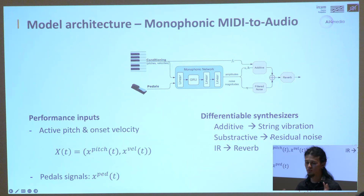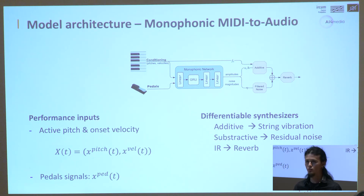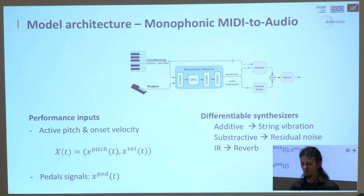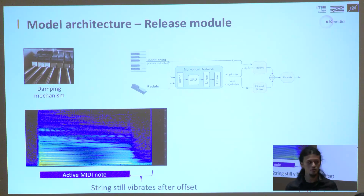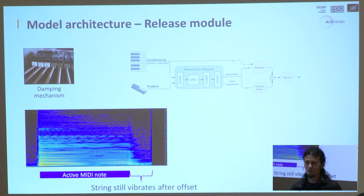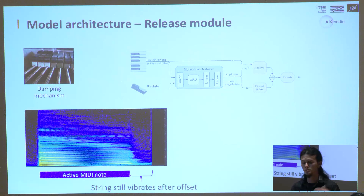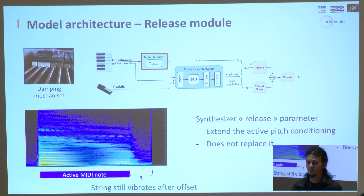The additive synthesizer is responsible for everything related to string vibration, while the subtractive synthesizer reproduces all the residual noise such as the key being pressed down to the body of the piano. The impulse response handles the reverb. There is also a damping mechanism: when the note is released, the damper presses down to attenuate the vibration, but the system is not instantaneous, so the string still vibrates after the note is released. Taking inspiration from the release parameter, we extend the active pitch conditioning so the additive synthesizer can generate sound even after the note is released.